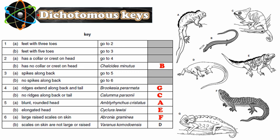This is how we use the dichotomous key to identify animals. You ask: does it have this feature? Yes, go to two. No, go to three. Then at question three you follow the next branch, and you continue until you find the right name of the animal. I hope that was helpful — until next video, ciao!